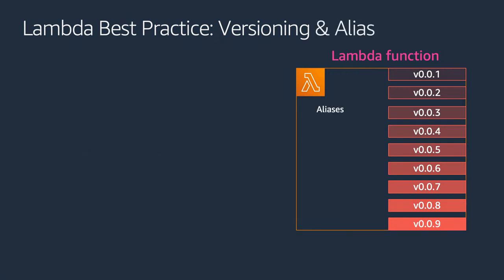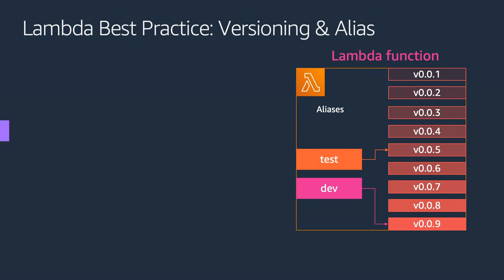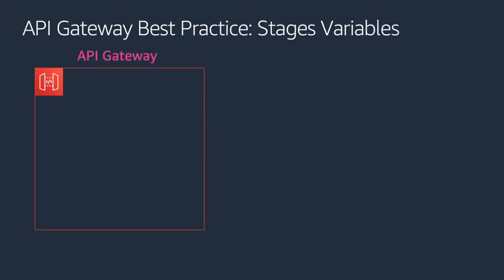To help prevent buggy code from going into production, Amazon allows another concept called aliases. An alias means you can create an alias for a particular version. For example, the dev alias will always point to the version you want - say version 9. You can also create a test alias pointing to version 5 or version 4 or any other version. Likewise, you can have a prod alias which is lagging behind dev and test environments. Aliases are mutable pointers which can move front and back.